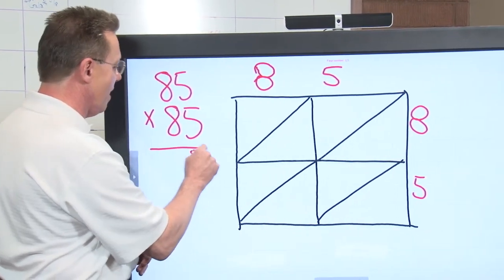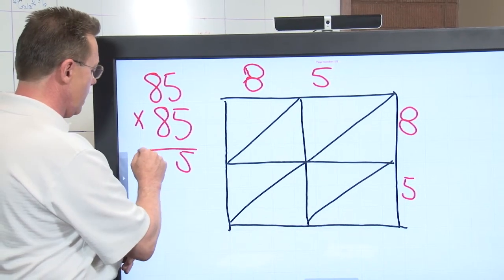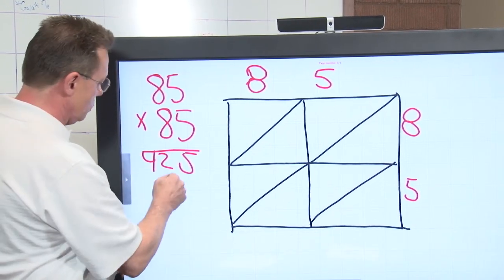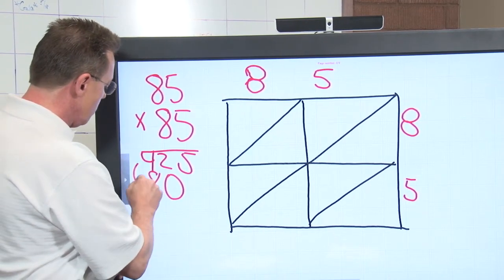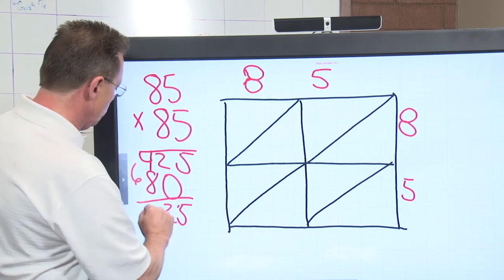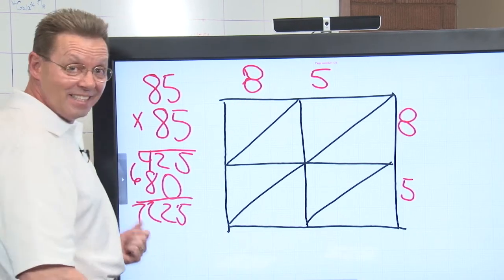5 times 5 is 25. 5 times 8 is 40. Carry the 2, 42. 8 times 5 is 40. 8 times 8 is 64. Carry the 4. And your number should be 5, 2, 2, 7. And that's the answer.